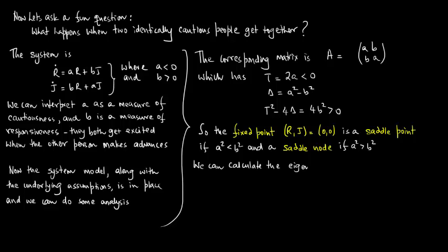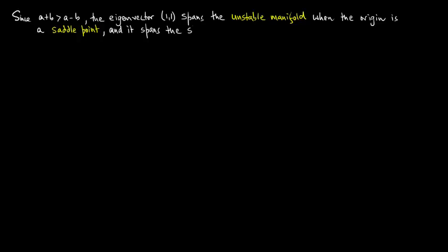We can calculate the eigenvalues and the corresponding eigenvectors. Lambda 1 is a plus b, v1 equals (1,1). Lambda 2 equals a minus b, and v2 equals (1,-1). Since a plus b is greater than a minus b, the eigenvector (1,1) spans the unstable manifold when the origin is a saddle point, and it spans the slow eigendirection when the origin is a stable node.